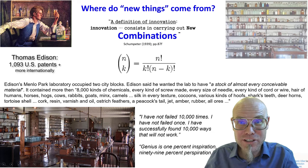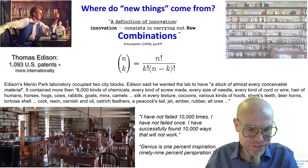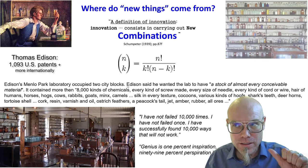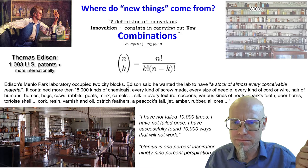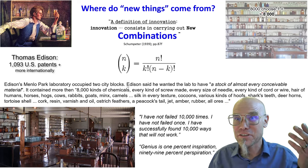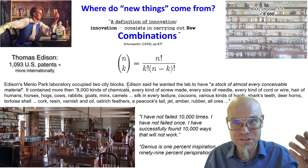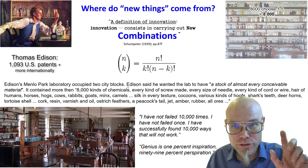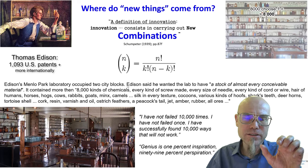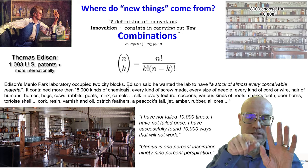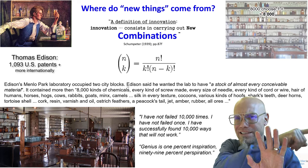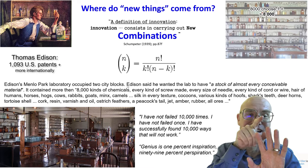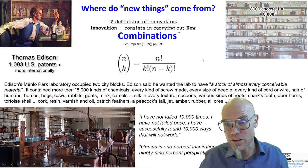Let's see how many combinations we can get out of the 8,000 kinds of chemicals Edison had. If we have 8,000 kinds of chemicals and choose one, we have 8,000 possible choices. But if we choose two, we can pair the first with the second, the first with the third, all the way up to the first and the 8,000th, then the second and the third, and so forth. Working out the math, we get 32 million different possible combinations already. If we choose three out of 8,000, we get 85 billion. And 8,000 choose four gives us 170 trillion.